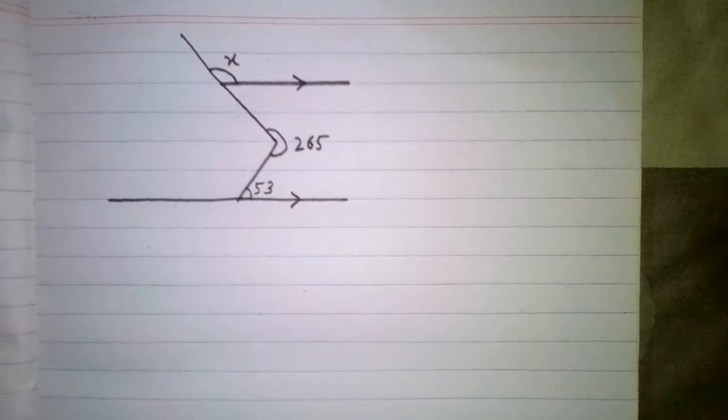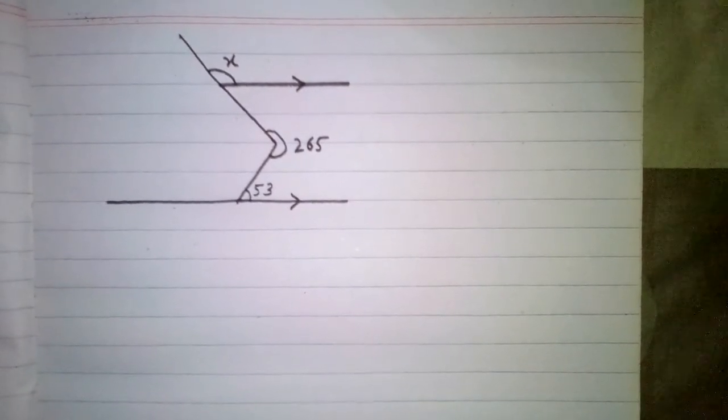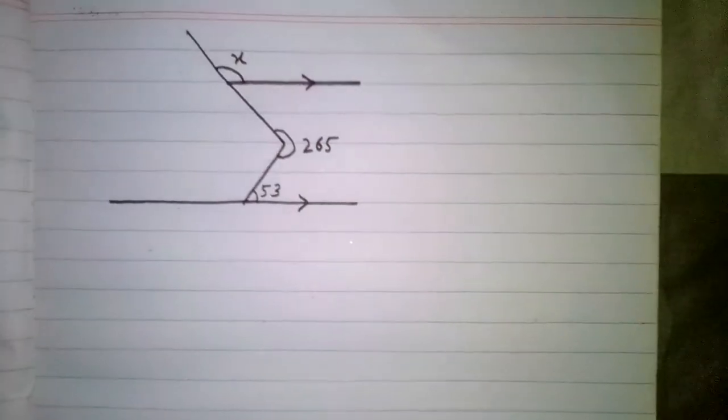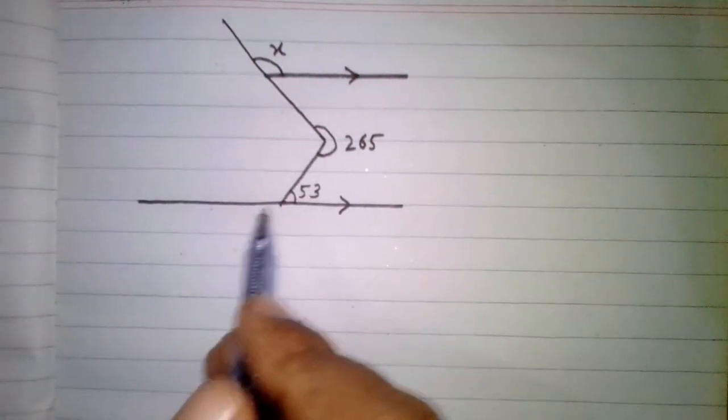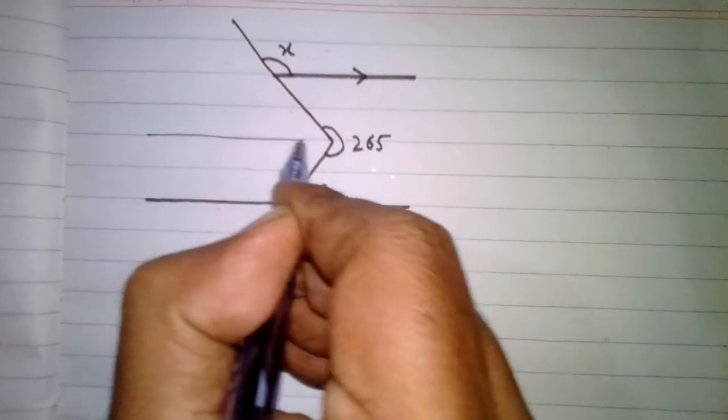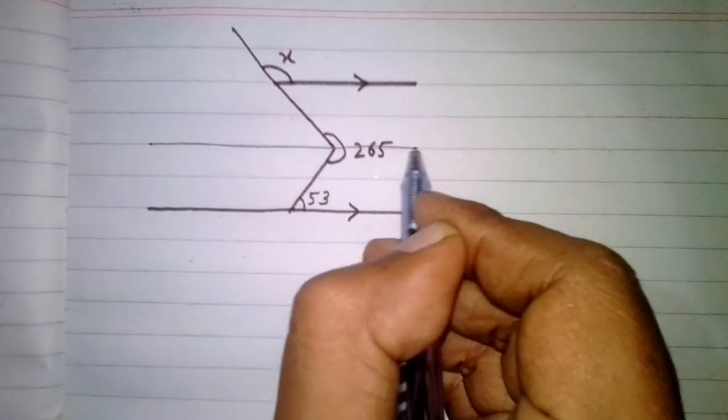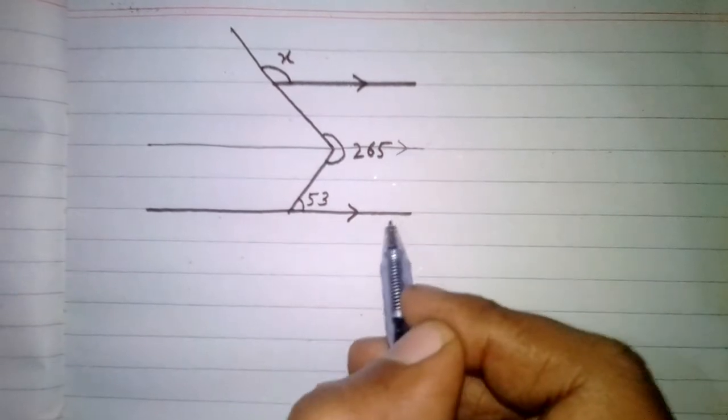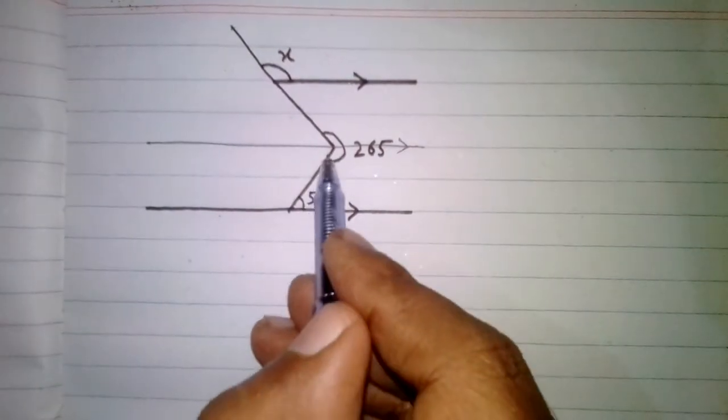In this video we are going to find out the value of the angle X. So first of all we can draw a line passing through this point, and if this line is parallel to this line and they are cutting via transversal then